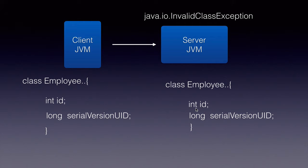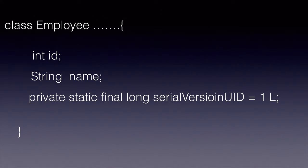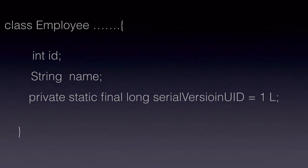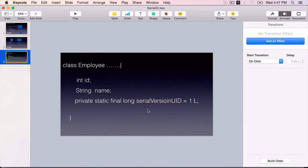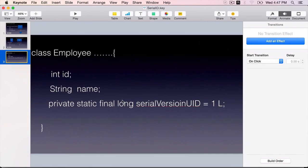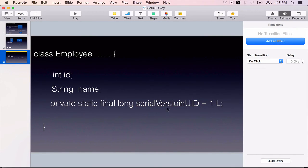To avoid all these issues, we as developers should include a field called serial version UID on every class that implements Serializable. If we do that, then the JVM will not automatically generate the serial version UID, which could cause problems. We have to explicitly define this field and take control into our own hands.